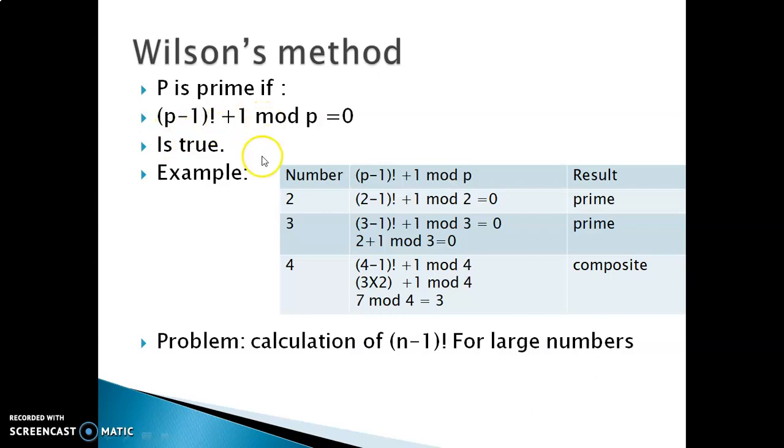As we can see in this table, for number 2, I do 2 minus 1 factorial, so this will be 1, so 1 plus 1 is 2, modulo 2 is 0, so the number is prime. Then we have 3, so 3 minus 1 is 2, 2 factorial is 2 itself, 2 plus 1 is 3, 3 mod 3 is 0, so the number is prime, 3 is a prime number.